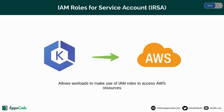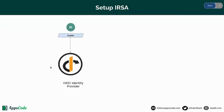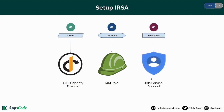Now let's see how to set up IRSA. First, you have to create the OIDC identity provider for your cluster — I have already created it for my cluster. Then you have to create an IAM role, and the proper IAM policy should be attached with it. In our case we will access S3 buckets, so this policy should define the access permission for those buckets. Finally, we have to create a Kubernetes service account and annotate it with that IAM role.